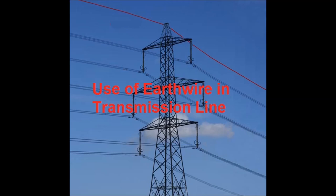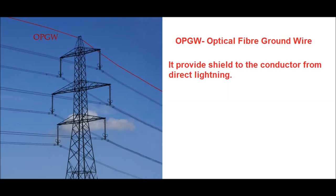Hello friends, today I will discuss the use of earth wire in a transmission line. The earth wire in a transmission line is located at the top of the transmission tower. Nowadays, optical fiber ground wire is used as an earth wire. It provides a shielding effect to the conductors from direct lightning.